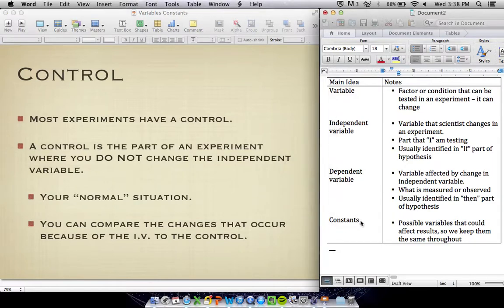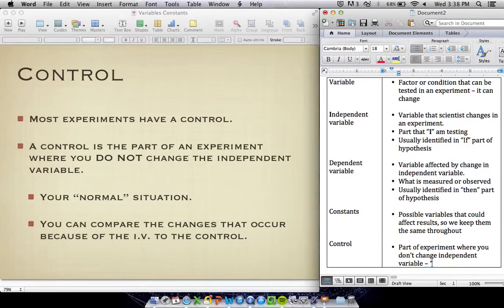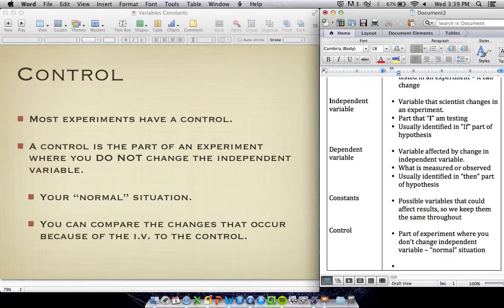The control is our last thing. The control is the part of the experiment where you don't change the independent variable. You can think of this as the normal situation. In my example about growing plants, the control plant would be the plant that gets sunlight. Plants normally get sunlight, so an experimental plant might be a plant that gets no sunlight. It's important to add here that not every experiment has a control. Sometimes you have two experimental things that you are comparing against each other. You don't have a normal situation to compare to, you just compare two different tests.